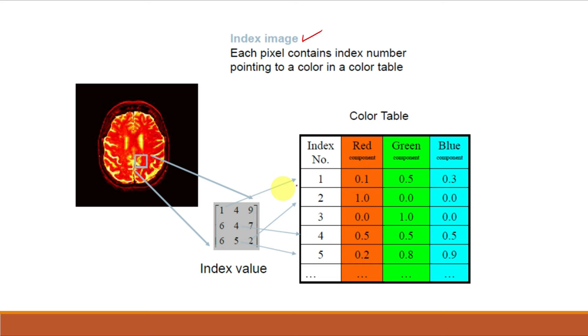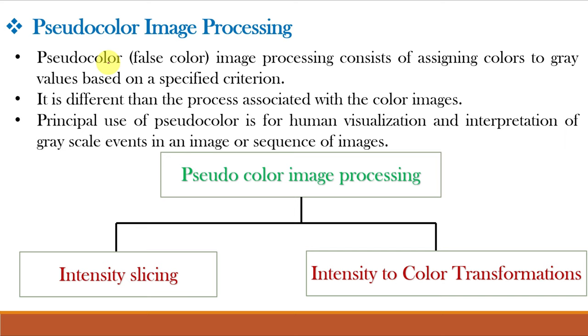This pseudocolor image when displayed can make the identification of certain features easier for the observer. The mappings are computationally simple and fast. The pseudocolor image processing consists of assigning colors to gray values based on some specific criterion. And it is different than the process associated with color images where an abstract mathematical model known as color space is used to characterize the colors.